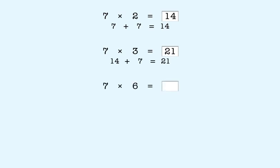To multiply seven by six, you start with twenty-one. You double it and get forty-two.